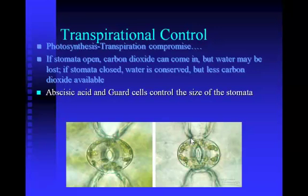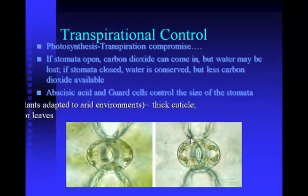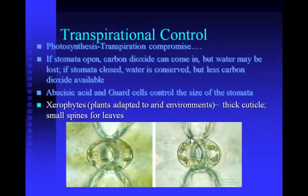Abscisic acid controls the potassium ion levels in the guard cells. If there's more potassium ion in the guard cells, more water will rush in because the guard cells would be hypertonic due to the excess potassium. As more water enters the guard cells to dilute the potassium, the guard cells bend — as shown in the picture on the left — and that causes the stomata to open. Xerophytes are plants adapted to arid or dry environments; they usually have a thick cuticle, small spines for leaves with a smaller surface area-to-volume ratio, and sometimes fewer stomata.